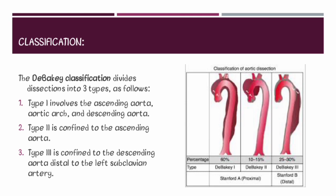In the figure, percentages are given: DeBakey type 1 accounts for 60% of cases, DeBakey type 2 accounts for 10 to 15% of cases, and DeBakey type 3 accounts for 25 to 30% of cases.